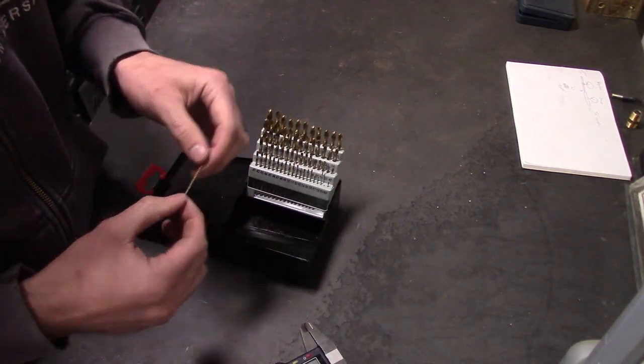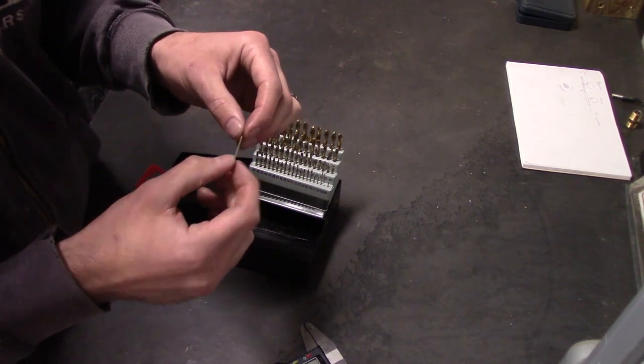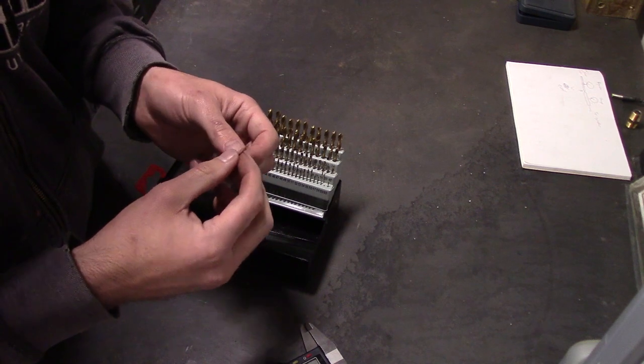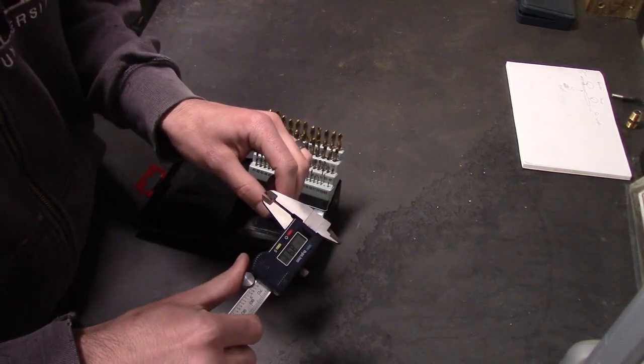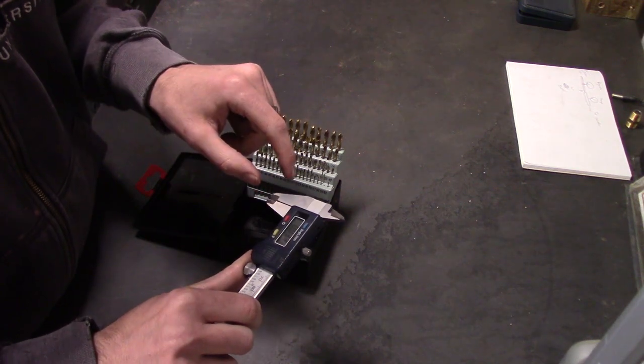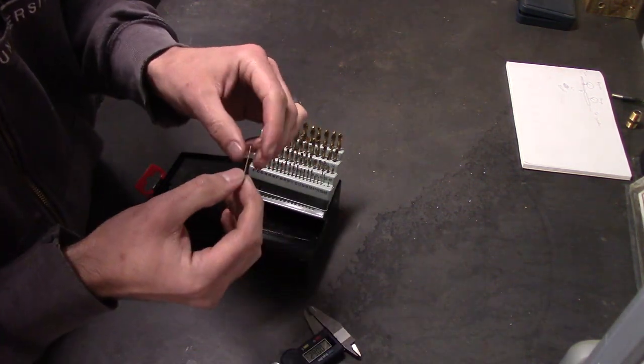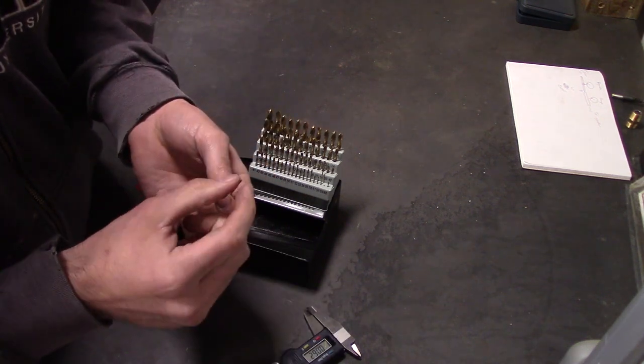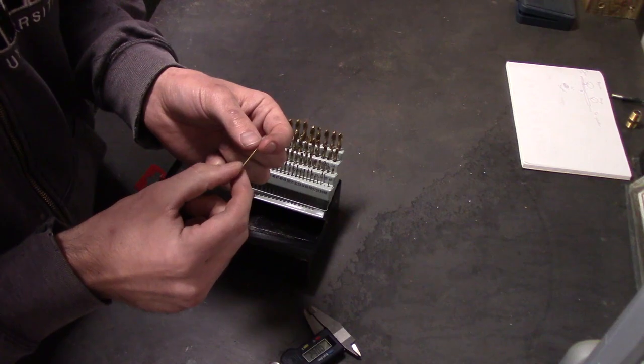Okay, so it ended up being a 59, number 59 drill bit, which is just a hair under one mil. It's at 0.98 millimeters. What that equals to in inches is 37 thousandths of an inch. So tomorrow we're going to put this in the drill press. Hopefully the drill press chuck is small enough to accept this and then we'll go from there.